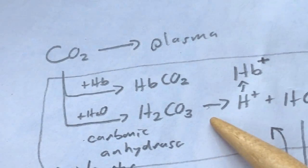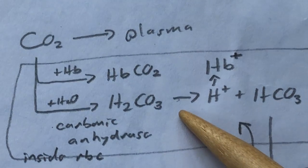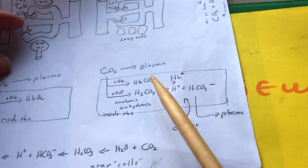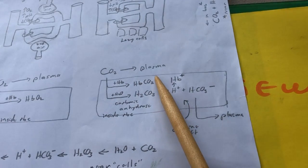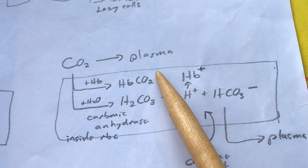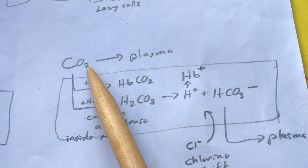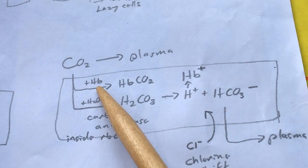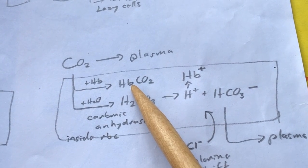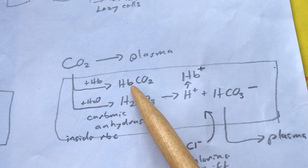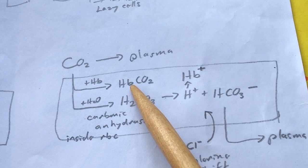Now for the more complicated story of how carbon dioxide is moved around. Carbon dioxide can dissolve directly into the plasma, but that only represents about seven percent of the carbon dioxide. Carbon dioxide can also enter a red blood cell and combine with hemoglobin to make carbaminohemoglobin, and that represents about 20–23 percent of the carbon dioxide being moved through your system.